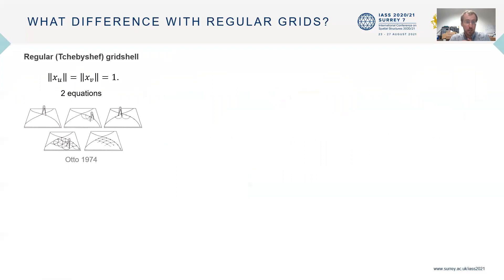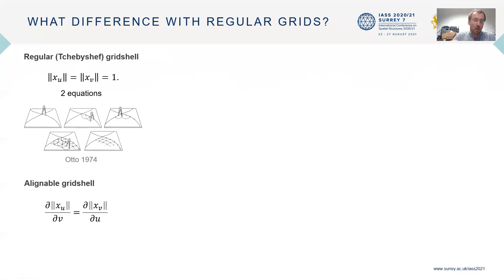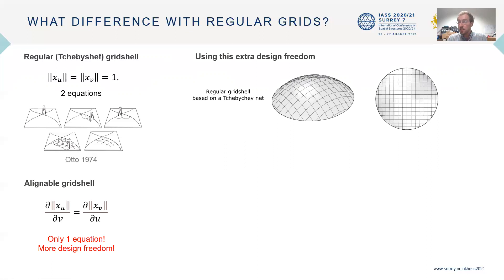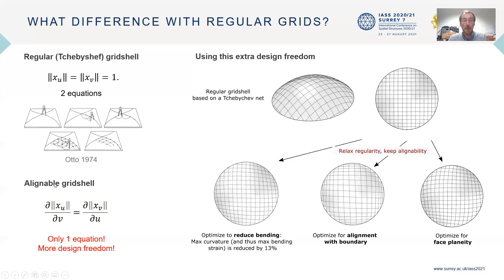There are two key differences with regular grid shells. For regular grid shells, you have two partial differential equations that dictate the geometry, meaning that if you try to clad a given surface, your patterning is quite constrained — you have to use, for example, the compass method. For alignable grid shells, you just have one partial differential equation, so you have more design freedom. You can use this extra freedom to get more properties: for example, looking at a spherical dome made from a Chebyshev net minimized for bending energy, if you want to deploy it from a bundle rather than a planar state, you can relax these equations while maintaining alignability — enabling you to reduce bending stresses, locate boundary points exactly at the boundaries to simplify detailing, or obtain planarity of the facets.